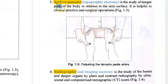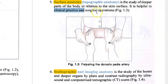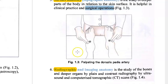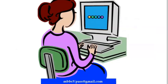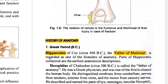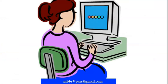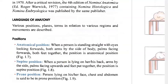Surface anatomy is important because you should know the deeper parts of the body in relation to the skin surface. In clinical practice, you will know exactly what structure is there, its boundaries, and how to approach it surgically. Also relevant is radiology and imaging studies.